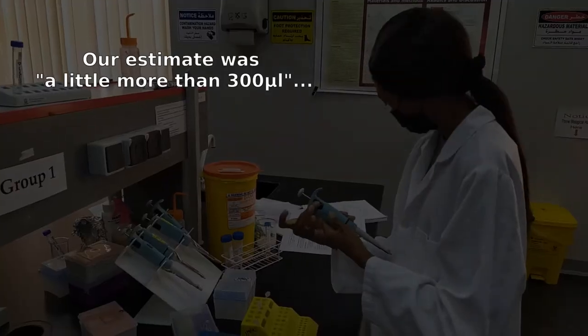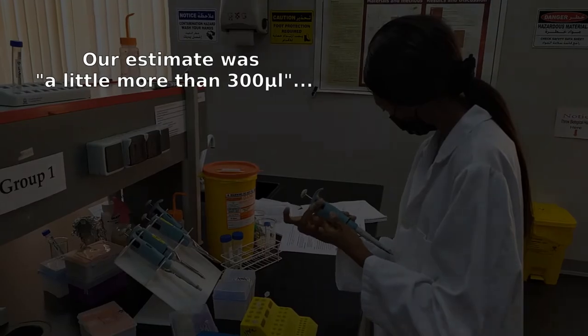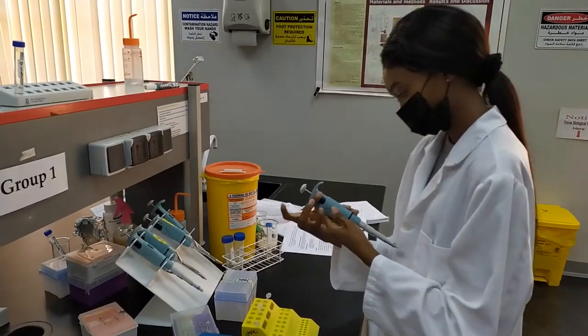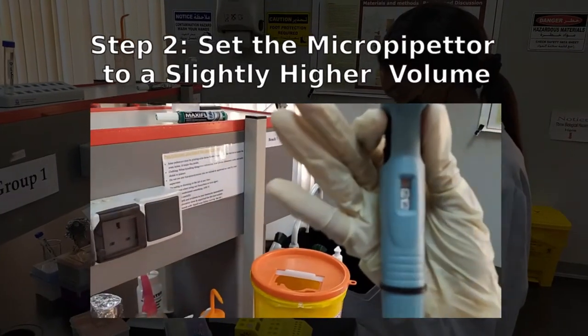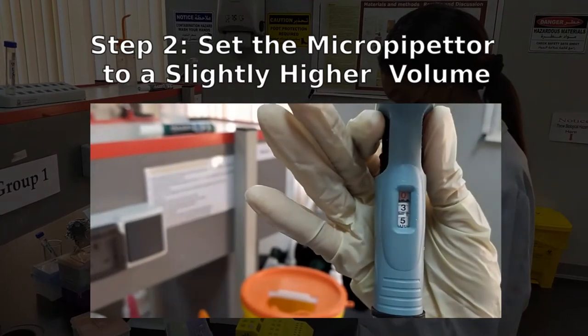Once you have this estimate, what you want to do is get a micropipetter and set it to a volume just a little bit larger, a little bit higher than the estimated volume.